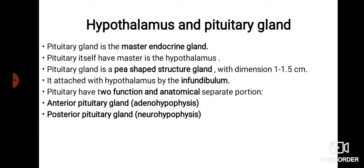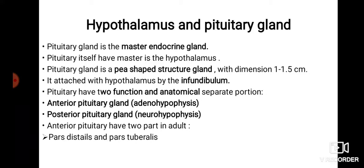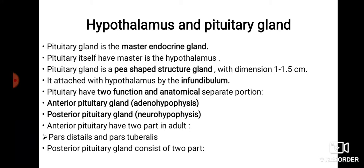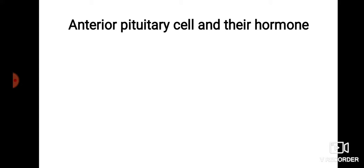The pituitary gland has two functional and anatomical portions. First is the anterior pituitary gland, also known as the adenohypophysis. The other is the posterior pituitary gland, also known as the neurohypophysis. The anterior pituitary has two parts in adults: the pars distalis and the pars tuberalis. The posterior pituitary consists of two parts: the pars nervosa and the pars intermedia.